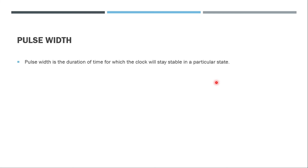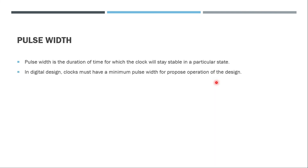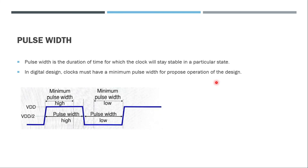The last topic for this video is pulse width. Pulse width is the duration of time for which the clock stays stable in a particular state. In digital design, the clock must have a minimum pulse width for proper operation of the design. Pulse width is defined from the 50% point — from VDD/2 on the rising edge to the next VDD/2 on the falling edge. This gives us pulse high and pulse low.